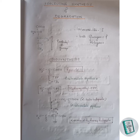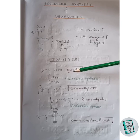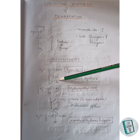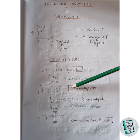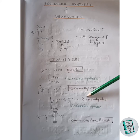The biosynthesis of isoleucine starts with pyruvate. The first step of isoleucine synthesis is similar to that of valine and leucine synthesis. Pyruvate forms an adduct with TPP and, upon decarboxylation, forms an intermediate called hydroxyethyl TPP.